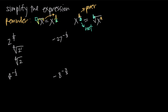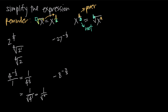Looking at another example where we have 4 to the negative 1/2 power: when we have a negative exponent, we can make it positive by moving the whole thing, including the base, to the denominator. This is really 4 to the negative 1/2 over 1, so pulling it to the denominator gives us 1 over 4 to the positive 1/2. Now, anything raised to the 1/2 power is the same as taking the square root, so this becomes 1 over the square root of 4. The square root of 4 is 2, so this just becomes 1/2.